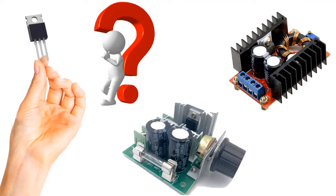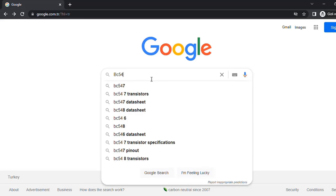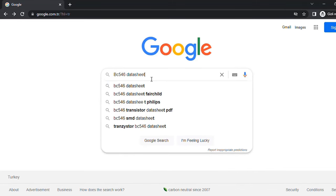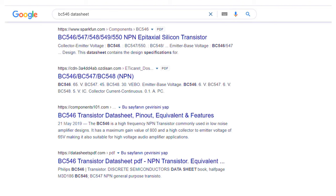As you can see, new circuit elements are emerging as a result of the rapid development of technology, and most of them are similar to each other, making it difficult to distinguish them. So how do we understand whether a 3-pin circuit element made of semiconductors is a BJT, MOSFET, JFET, voltage regulator, or another element? We write the numbers and letters on it, add 'datasheet' to the end, and search on Google to reach the technical specifications provided by the manufacturer.